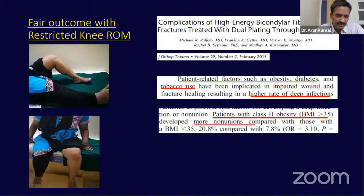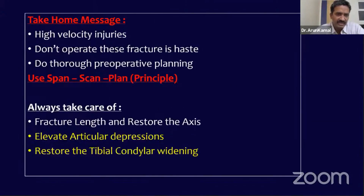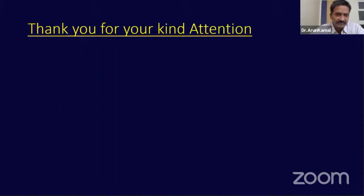My take-home message: when dealing with Schatzker's type 5 and type 6 tibial condylar fractures — all high velocity injuries — do not operate in haste. Do thorough preoperative planning. Use the span-scan-plan principle, take care of fracture length, restore the axis, elevate articular depressions, and restore tibial condylar widening. Thank you very much for listening.